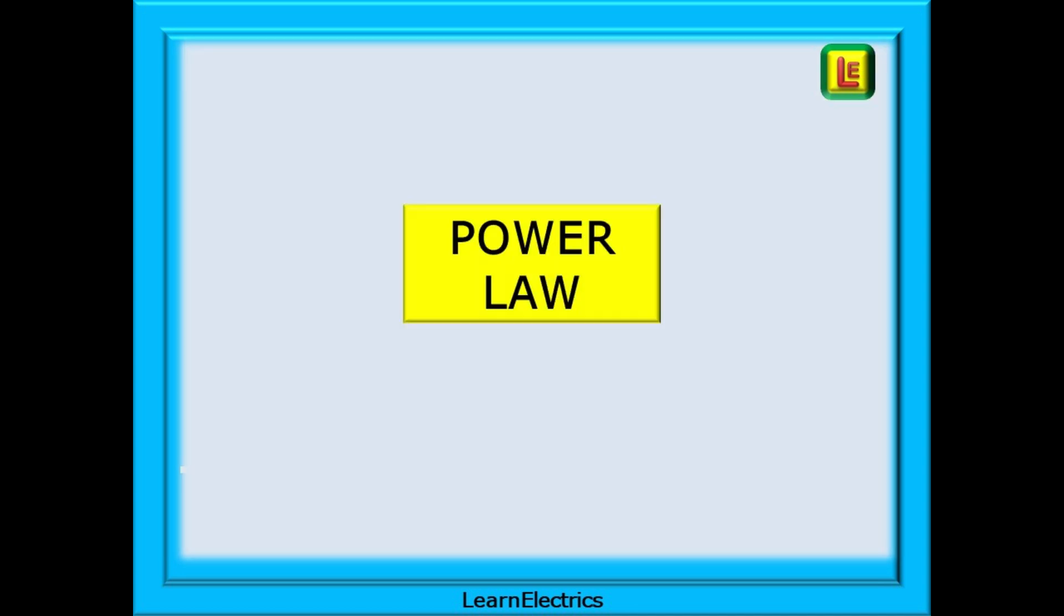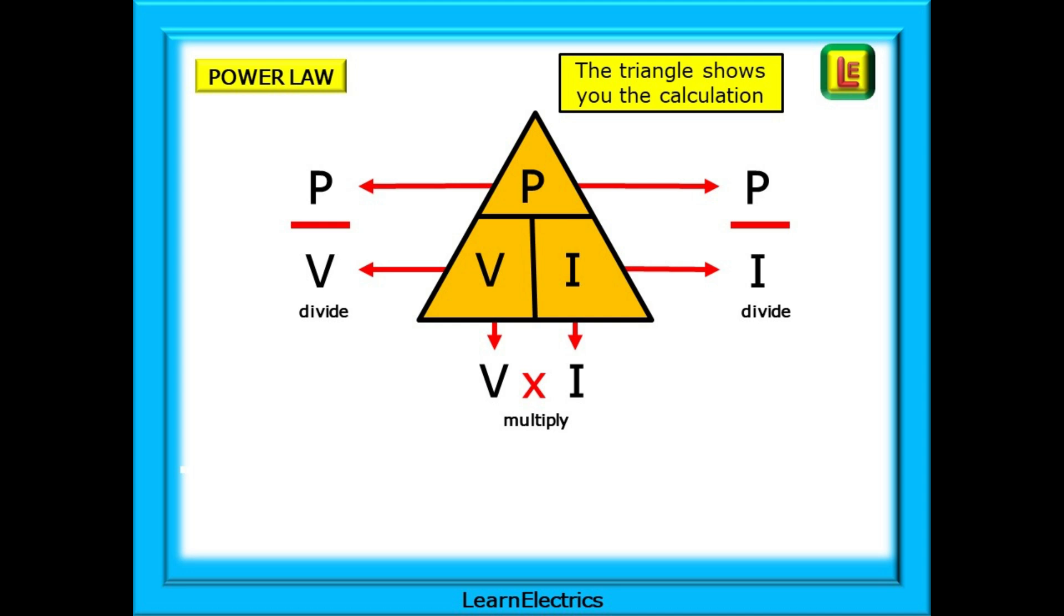Looking at power law next, you will see that we use this triangle in a similar way. If we know any two values, the formulas will give us the unknown third value. P is over V so P divided by V equals I. On the other side P over I or P divided by I gives us the unknown voltage. That leaves us with V and I on the same level so this is a multiplication. V times I is P for power.